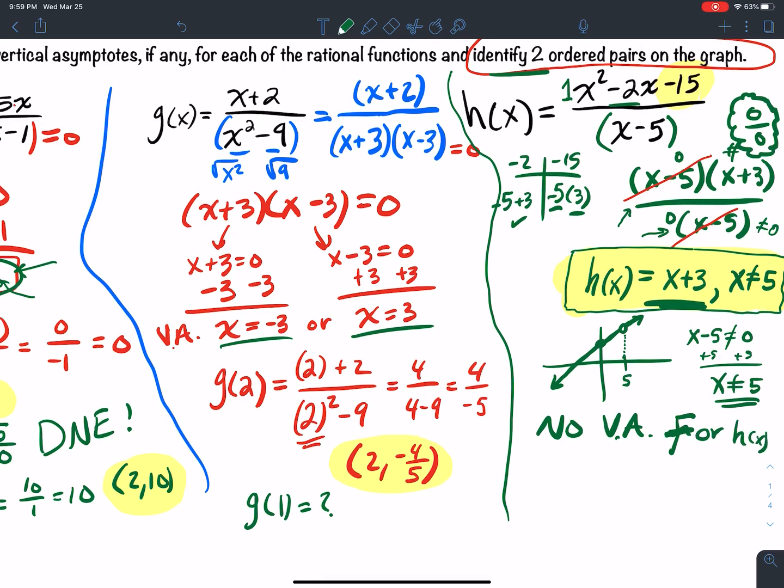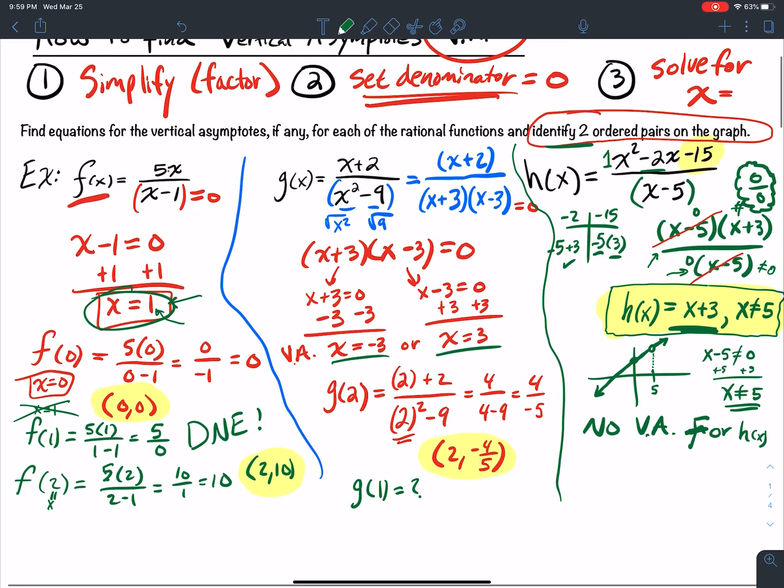For h(x), finding ordered pairs still works the same way. I just take h and I plug in a number. Maybe if I plugged in 1, that's 1 plus 3, which is 4. So a point is 1 comma 4. So no big deal for you to find ordered pairs.